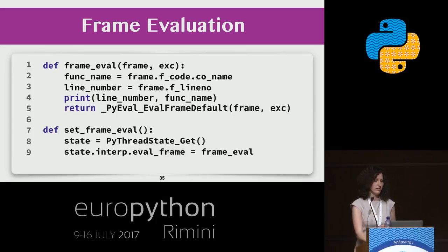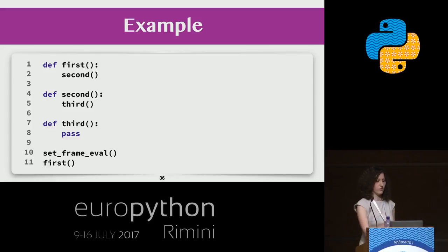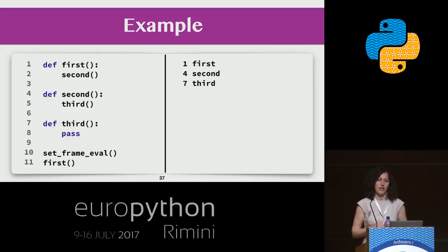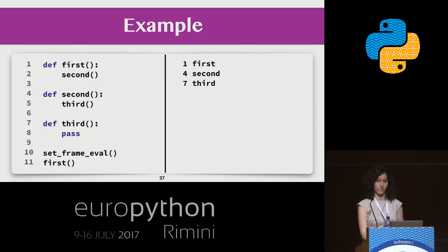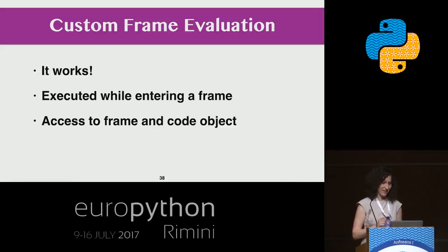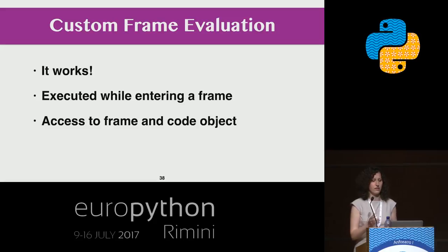Let's see how it works with an example. We have three functions: first, second, and third. The first calls the second, and the second calls the third. When we run this program, our custom frame evaluation function was called on line 1 when we entered function 'first', on line 4 when we entered 'second', and on line 7 when we entered 'third'. So our frame evaluation function is executed when entering every new frame, and inside it we have access to the frame object and the code object.